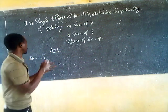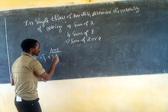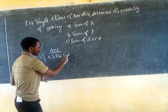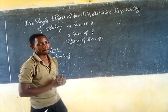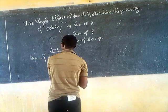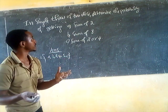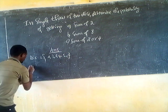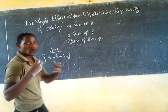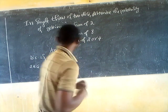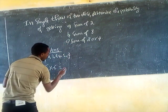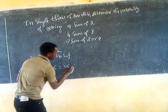The sides are one, two, three, four, five, six. We take two dice. The total outcome of two dice is six times six, which gives us thirty-six outcomes.